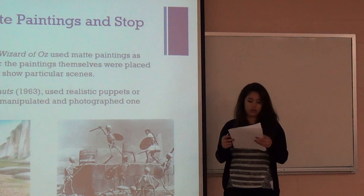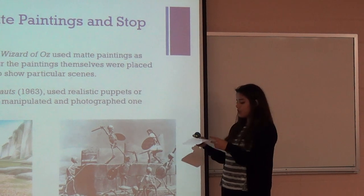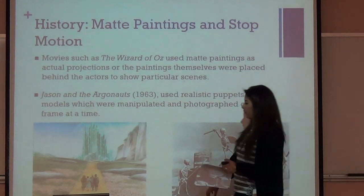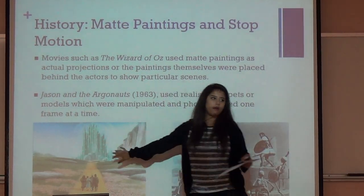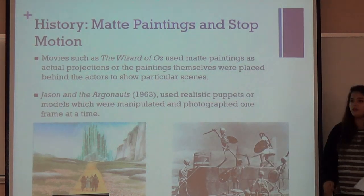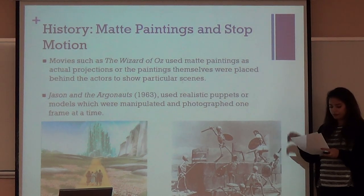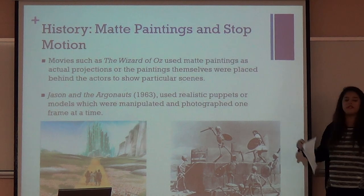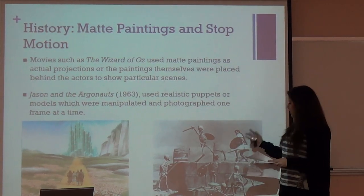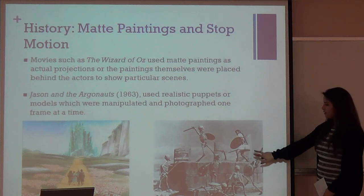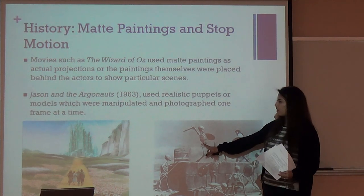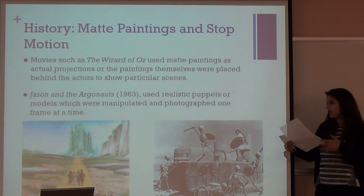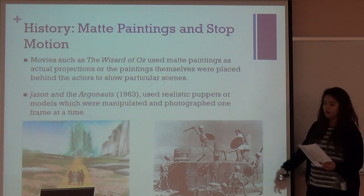The next type of visual effect used was matte paintings and stop motion. The Wizard of Oz uses matte paintings — everything in the background is a matte painting projected for the characters to walk toward in a scene. Studios back then had their own departments that would create matte paintings for specific scenes and movies. For stop motion, Jason and the Argonauts features skeletons that are puppets or objects moved, photographed, and manipulated in whatever way the scene required.